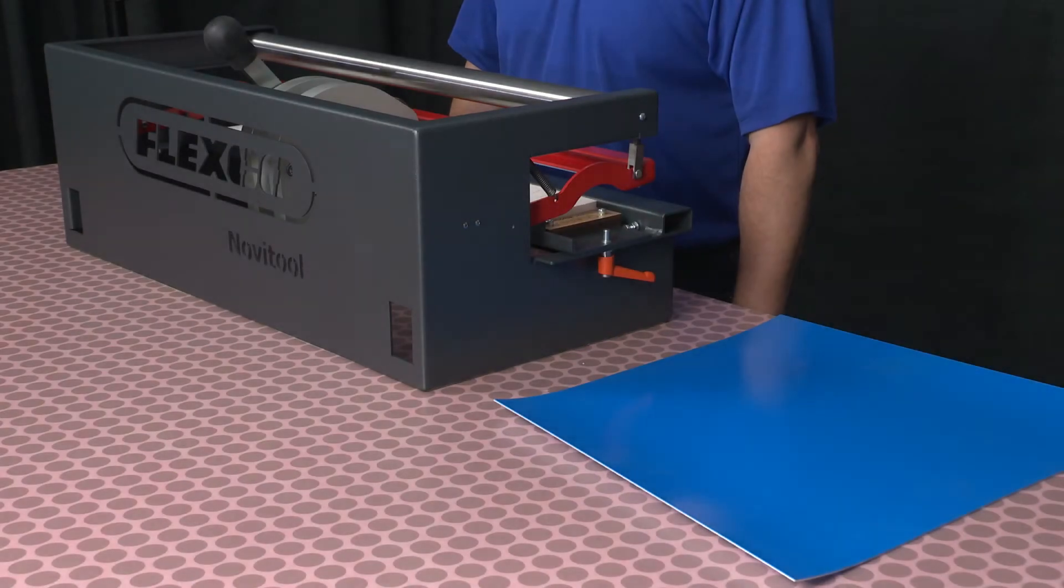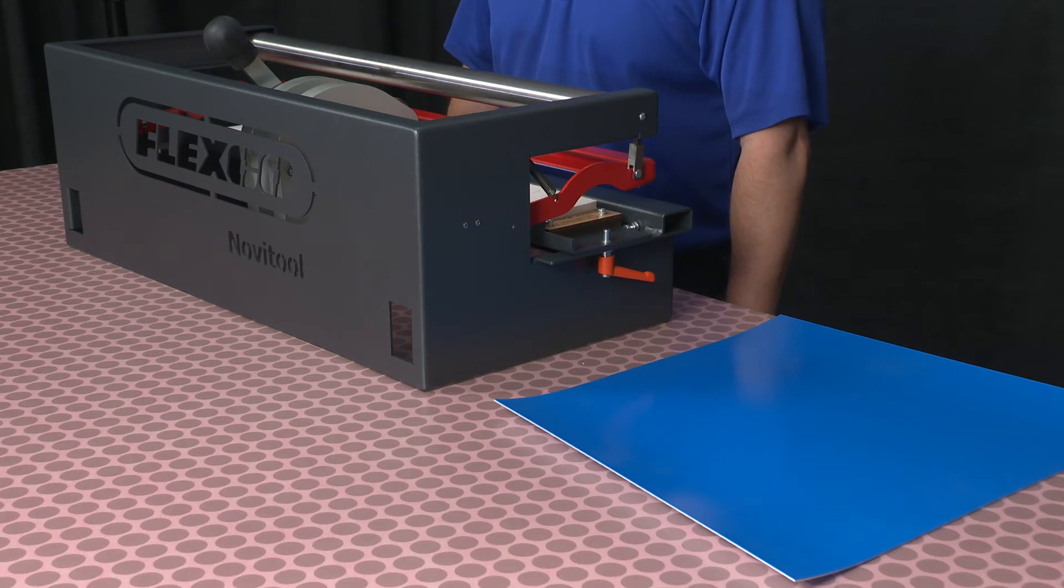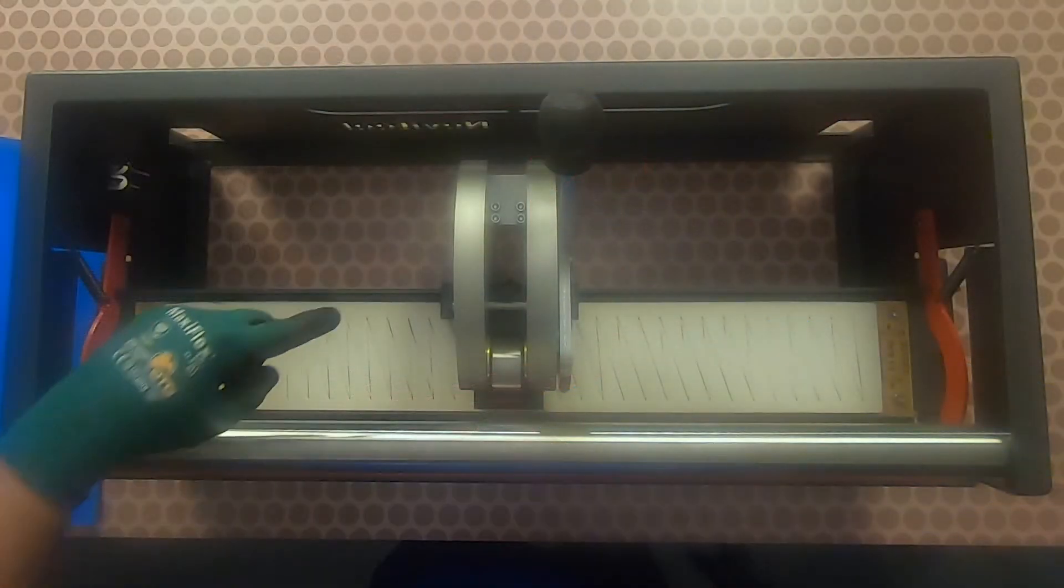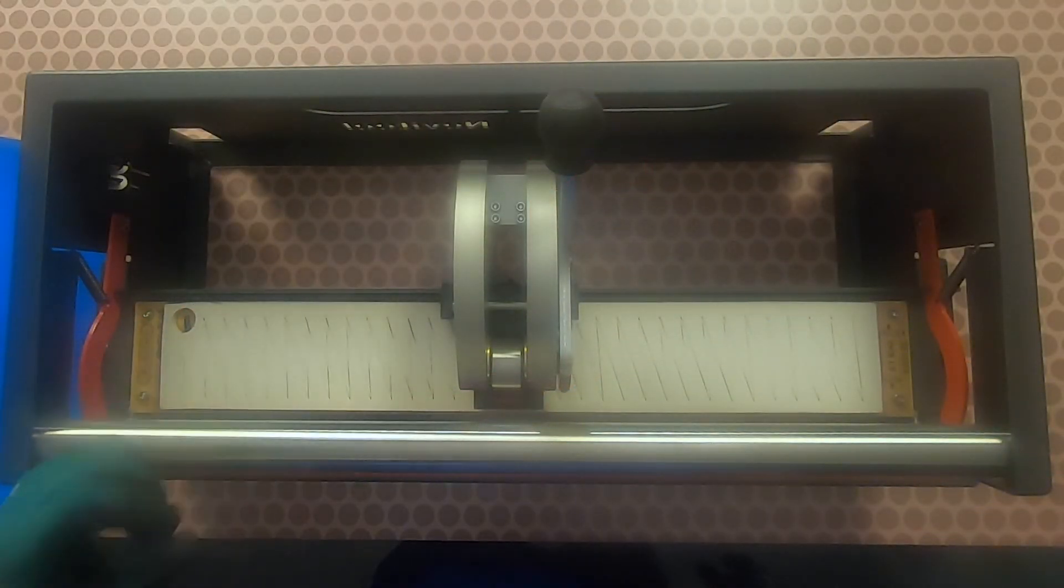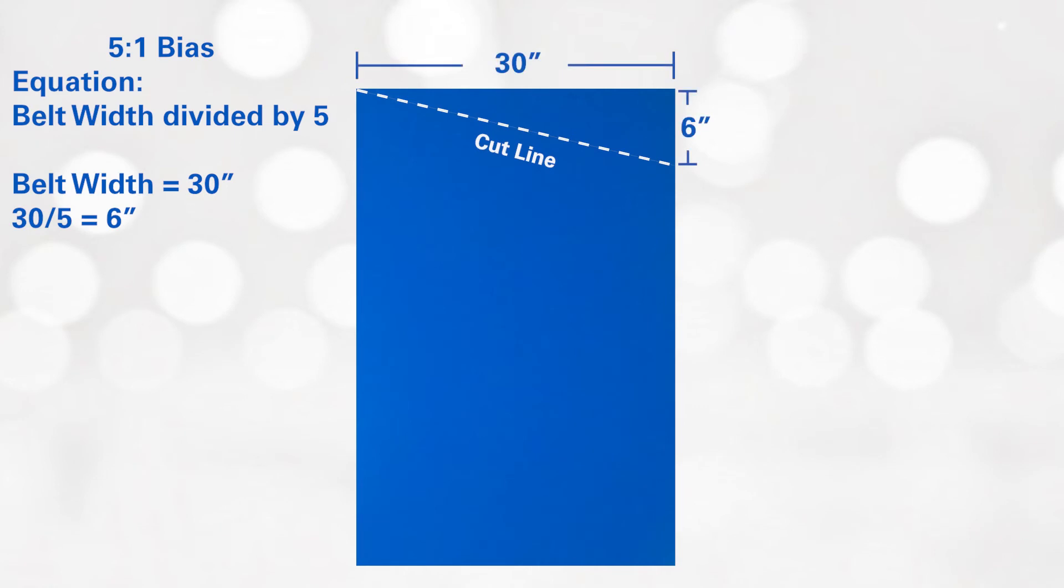Now I want to show you how to punch a bias finger. There are three tasks to complete when preparing to punch a bias finger: One, ensure the punch block is in the vertical position. Two, ensure the correct punch board is installed. For this demonstration, we will be using the 80 by 20 5 to 1 bias board. And three, prepare both belt ends by cutting the belt ends on a 5 to 1 bias.